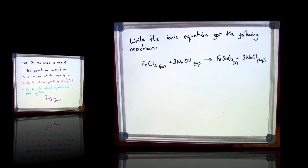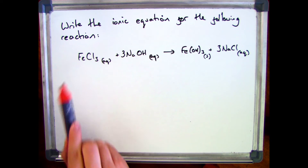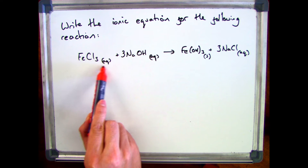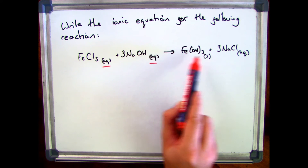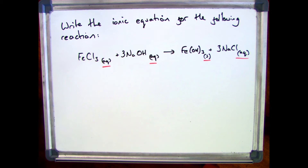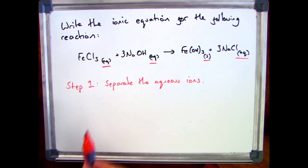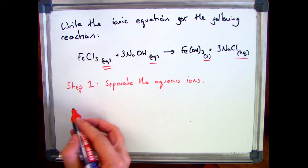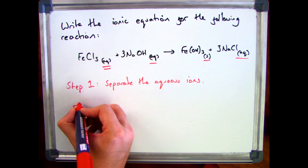If you had a question that said write the ionic equation for the following reaction, and you've got FeCl₃ aqueous reacting with 3NaOH aqueous to make Fe(OH)₃ and 3NaCl, your first step is to separate the aqueous ions. It's really important that you don't separate out anything that's solid, liquid or gas.